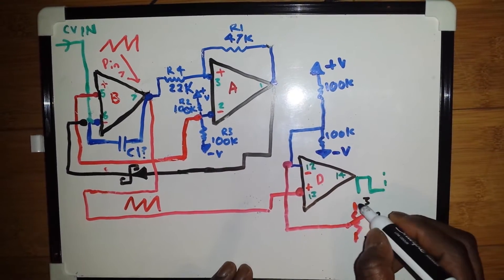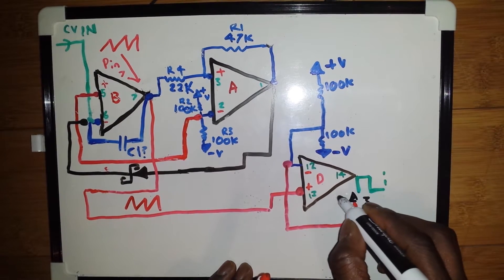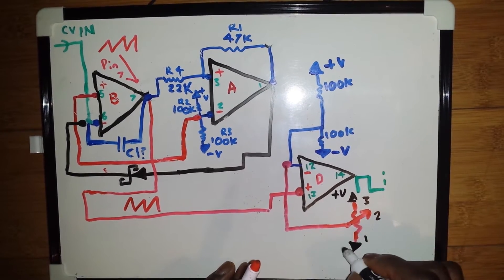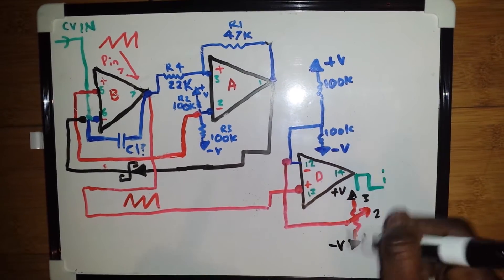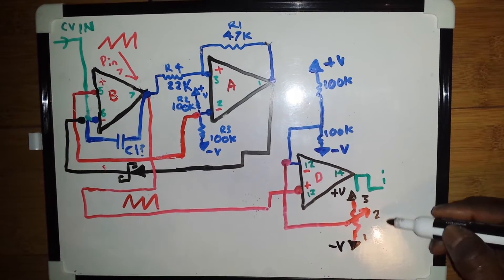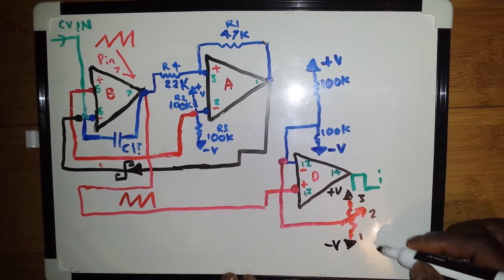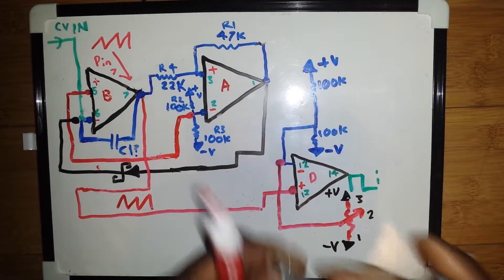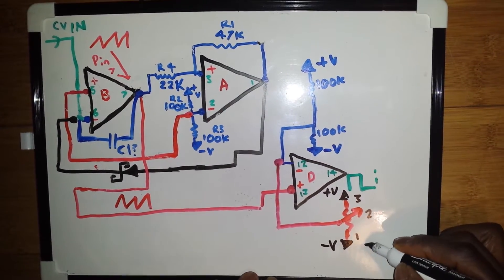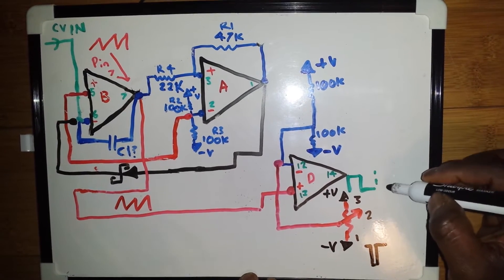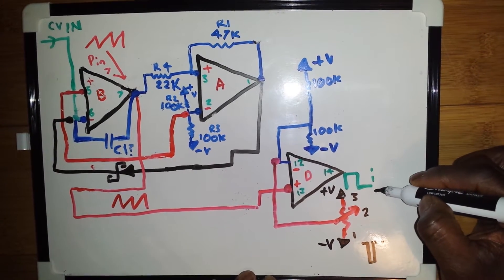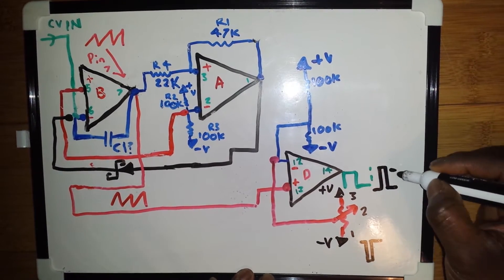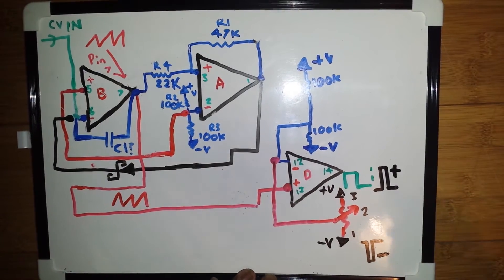And what we will do is take pin 3 to the plus voltage and take pin 1 to the minus voltage. Now this will give us a variable pulse width to the minus voltage when we turn this potentiometer one way. This will give us a negative pulse stroke square. When we turn it the other way we will get a positive pulse stroke square.